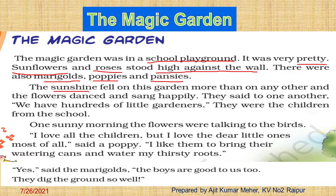The sunshine was falling on the garden and the flowers were so happy — they were dancing and singing. They said to one another, 'We have hundreds of little gardeners.' They were the children from the school, as all the children were taking care of them.